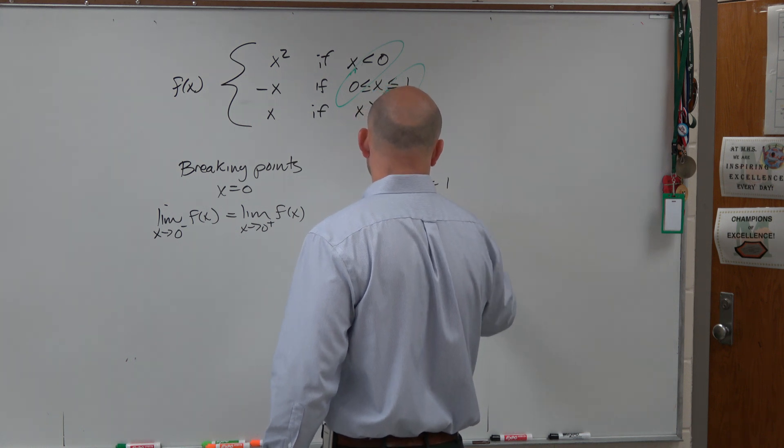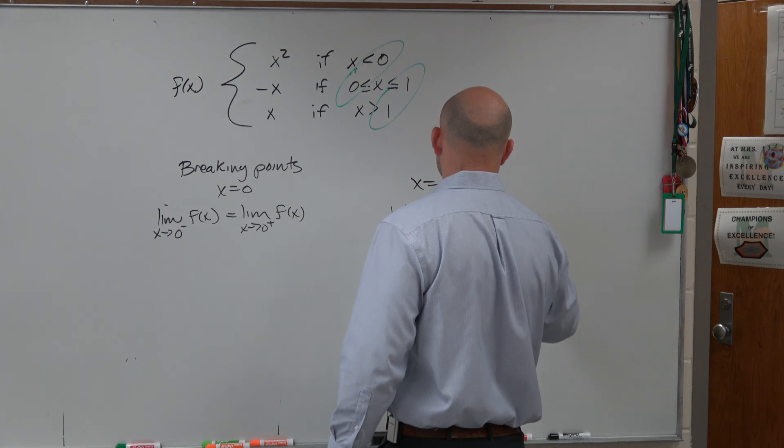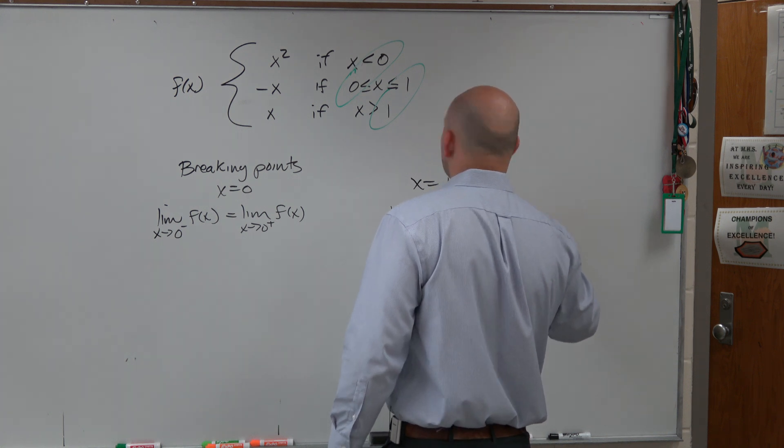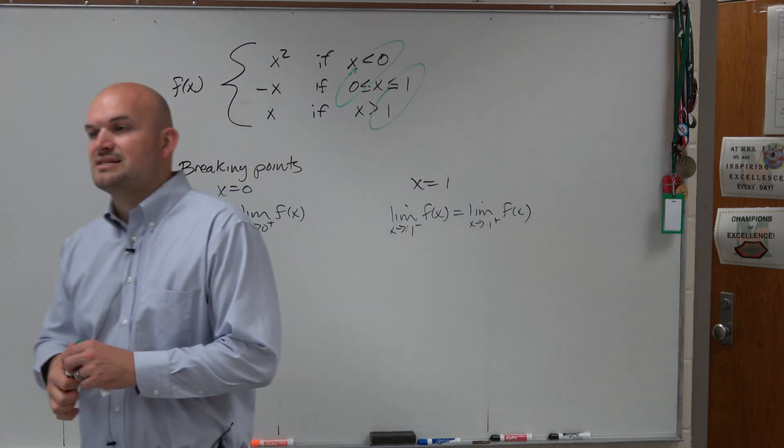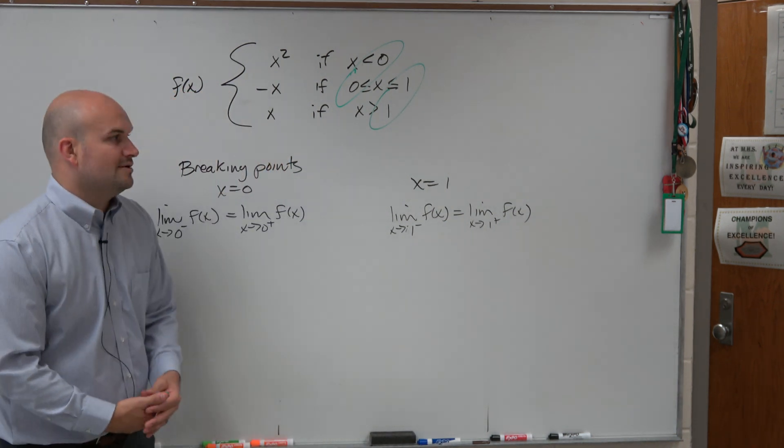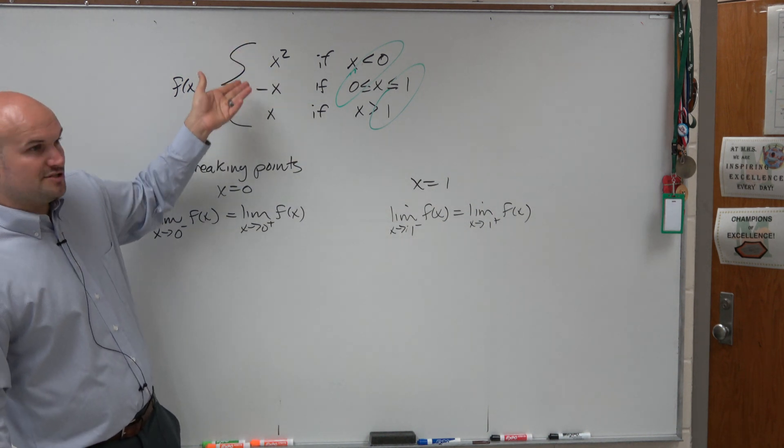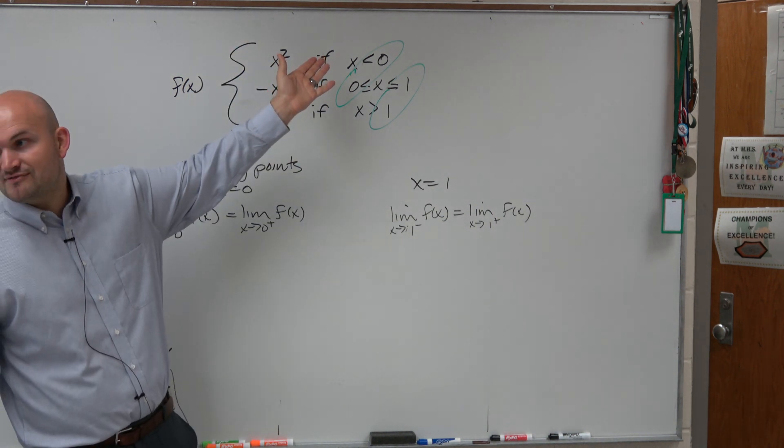The limit as x approaches 1 from the left of f of x has to equal the limit as x approaches 1 from the right of f of x. And the reason why I said as long as the limit exists, as long as they're equal, we know the limit exists, or it's continuous. Let's look at these functions. Is there any reason to believe there's any discontinuities in these functions?